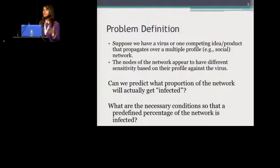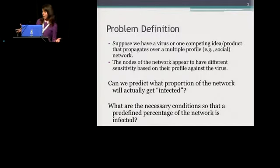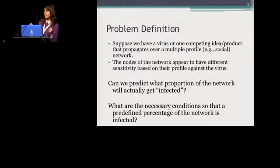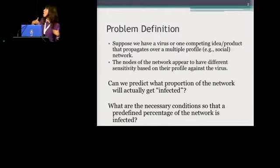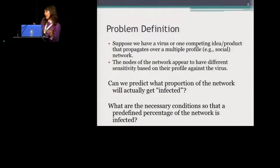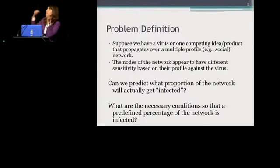Suppose we have a virus or a rumor that is spreading over a network where everyone has a different sensitivity against the event that is taking place. What will happen? What proportion of the network will get infected? Or to reverse the question, what are the necessary conditions in order for a specific percentage of the network to get infected?